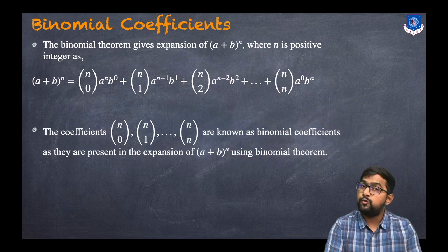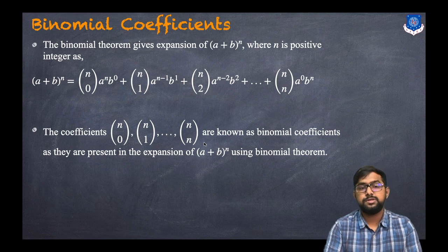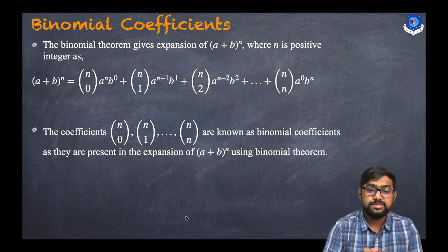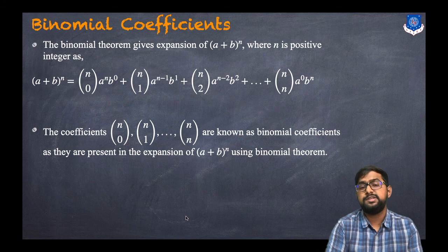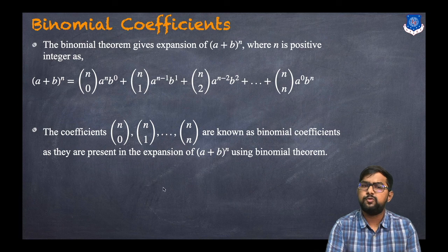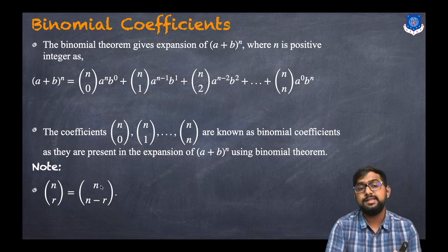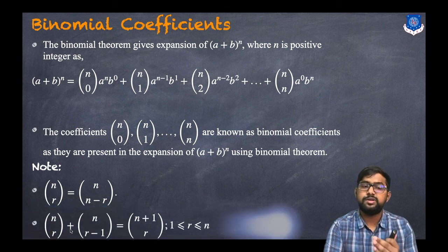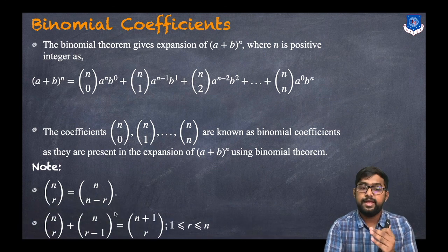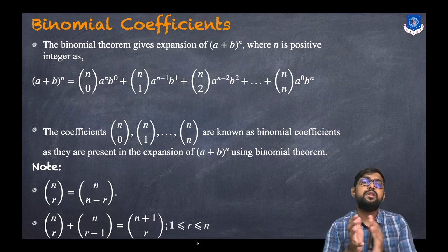The coefficients nC0, nC1, ..., nCn are known as binomial coefficients because they appear in the binomial expansion of (a + b)^n. Two important results to note: first, nCr = nC(n−r); second, nCr + nC(r−1) = (n+1)Cr, where r is between 1 and n.